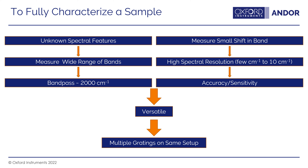To fully characterize a sample using Raman spectroscopy, you'd like to identify a large amount of unknown spectral features, which requires measuring a wide range of bands — modes in the sample with a wide frequency range. You'd want a band pass on the order of 2,000 wavenumbers or so to fully characterize all the spectral features in a sample.